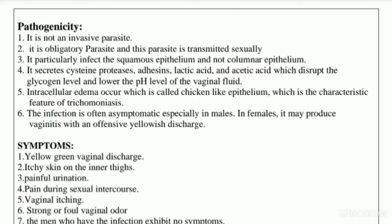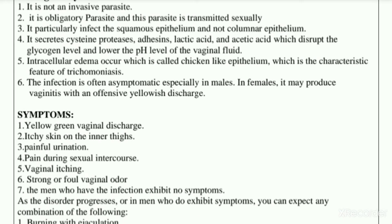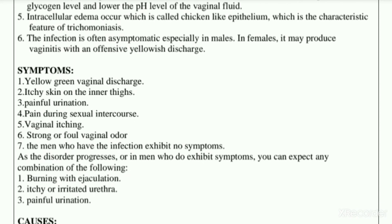Intracellular edema occurs, producing what is called a 'strawberry-like epithelium' — you can see bubble-like or pimple-like structures in the vaginal wall. This is a characteristic feature of trichomoniasis. The infection is often asymptomatic especially in males, but in females it produces vaginitis with offensive yellowish discharge.